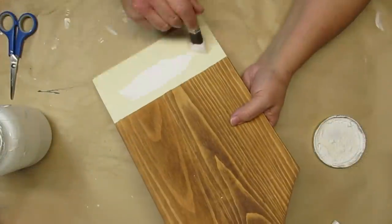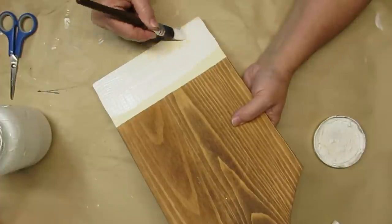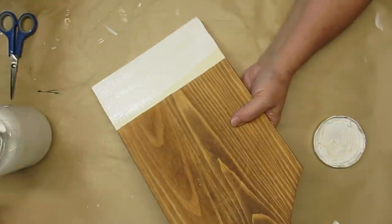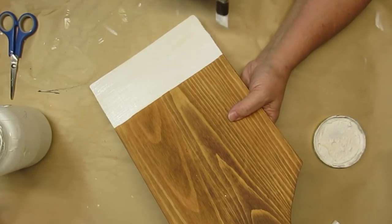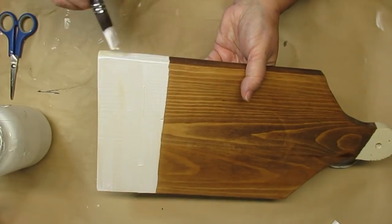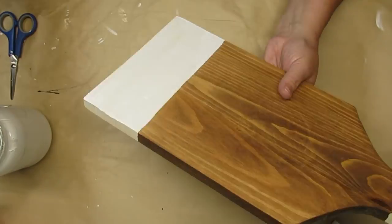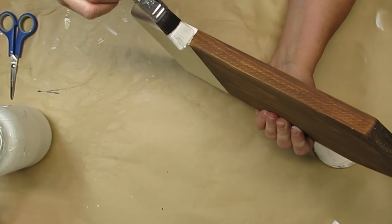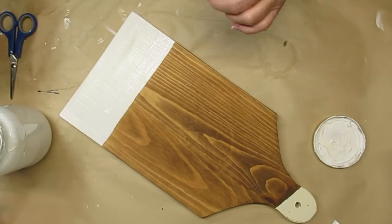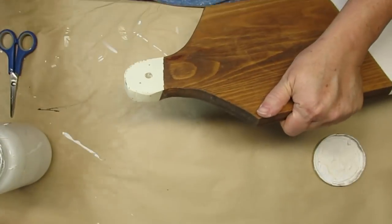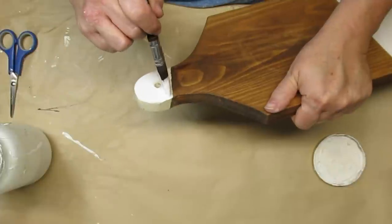My second project is also a thrifted find. This is a cutting board. It already had some off-white paint on it. I wanted to freshen it up a little bit so I'm just going to go over it with some of my white chalk paint. It's got this section down at the bottom and it also has a portion of the handle at the top. So I'm just going to cover those up and give them a couple of coats.